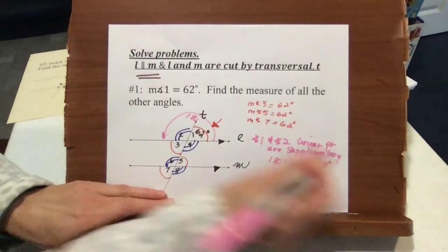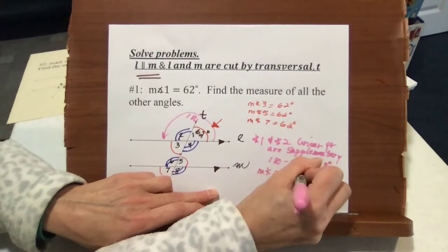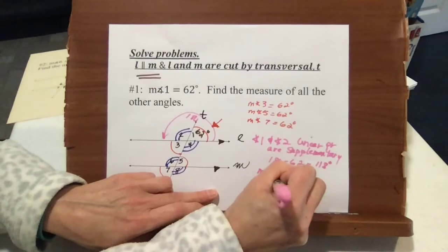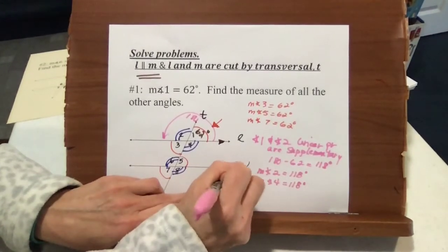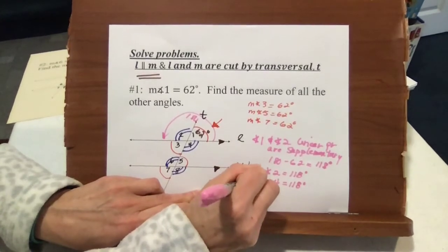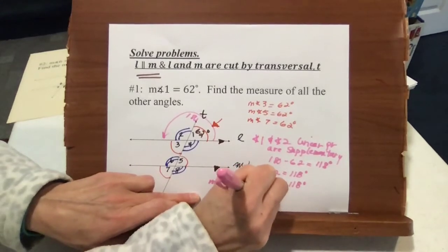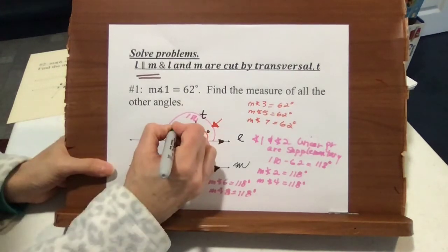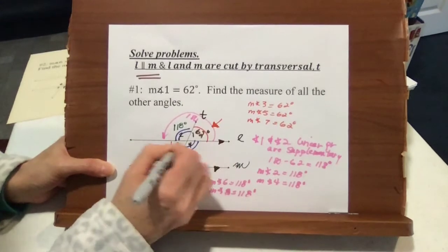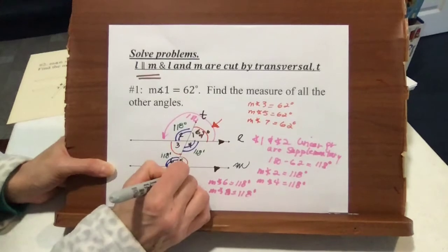So the measure of angle 2 equals 118, the measure of angle 4 equals 118 degrees, the measure of angle 6 equals 118 degrees, and the measure of angle 8 equals 118 degrees. You can write this information right on your figure because it will help you to see it — 118, 118, 118, 118.